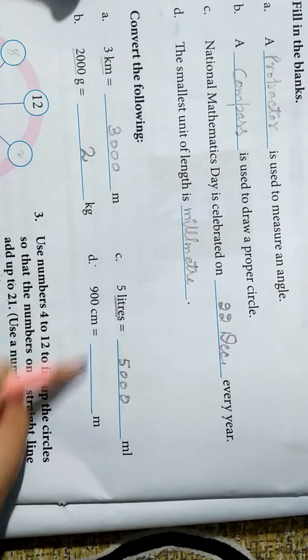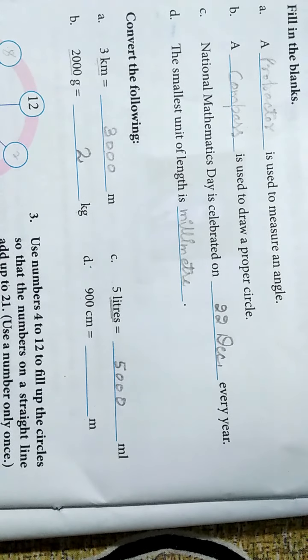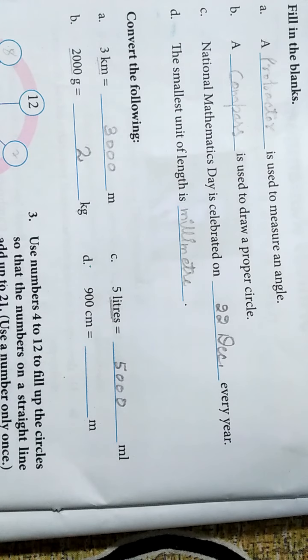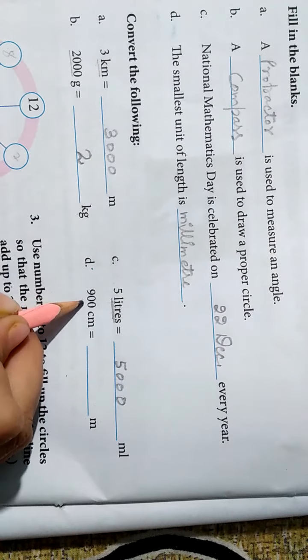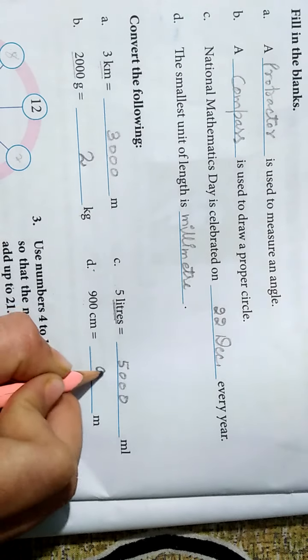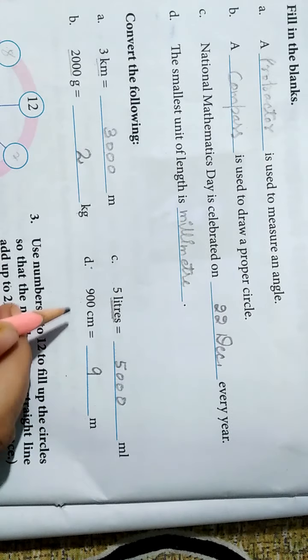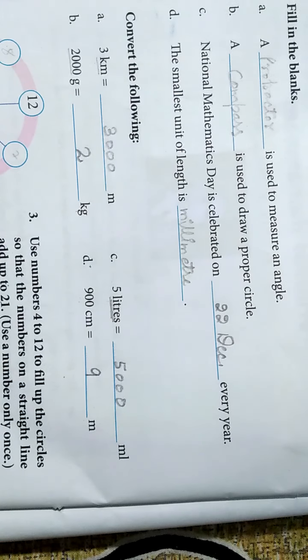Ab 900 centimeter equal to meter. Aapko maine bola tha. Kilometer bada hai to kilometer paas 1000. Meter chhota hai to uske paas 100. To usko 100 se divide. To kitna aega? 9 meter. To 9 meter equal to 900 centimeter. Clear?